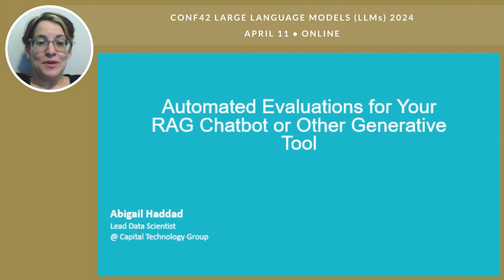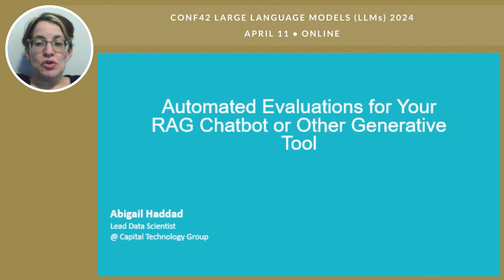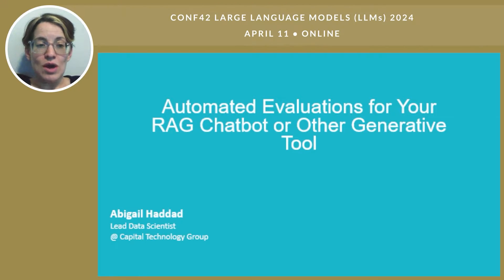Last year, like a lot of people, I spent part of a weekend making a little demo for a Retrieval Augmented Generation chatbot. This is a chatbot that uses an LLM to answer questions about a specific set of documents where those documents aren't necessarily in the LLM's training data. So the user asks something, your tool searches to find related text in your documents, and then it passes those chunks of text to an LLM to use in answering the question.